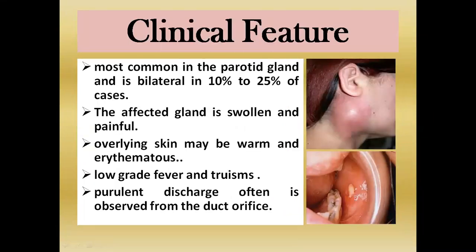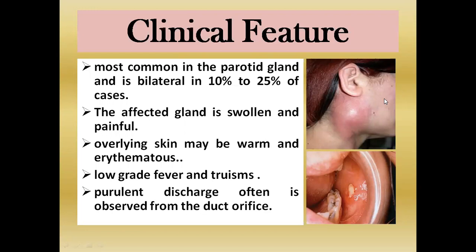The clinical presentations — signs and symptoms of chronic and acute inflammations. In acute bacterial infections, the clinical features include swelling and redness with purulent discharge. The inflamed area is due to bacterial infection, with overlying skin appearing warm and erythematous, along with swelling, low-grade fever, and trismus.